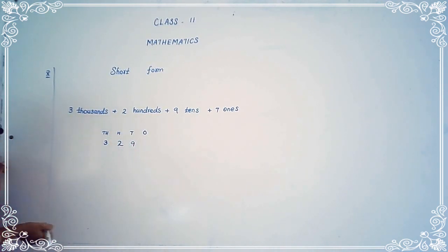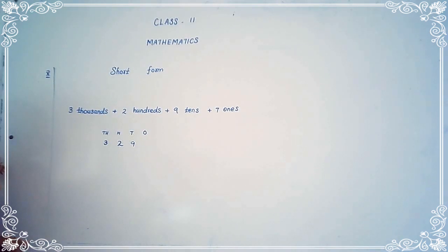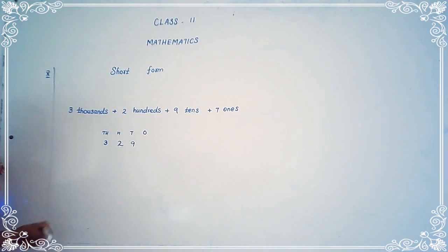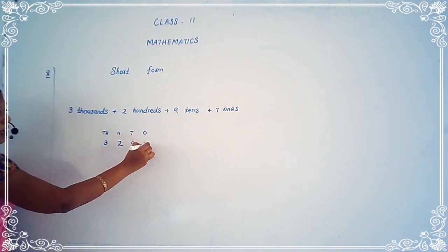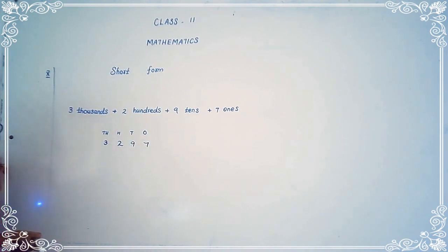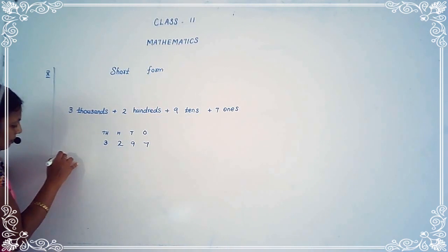Then see the ones place. How many ones is there? The place value of seven is in ones. So we have to write seven in the ones place. Then another example.